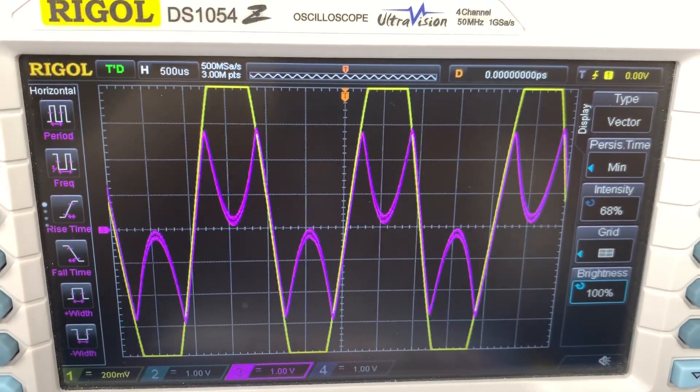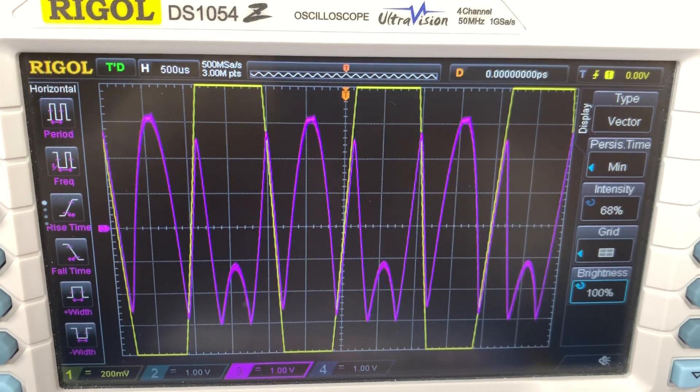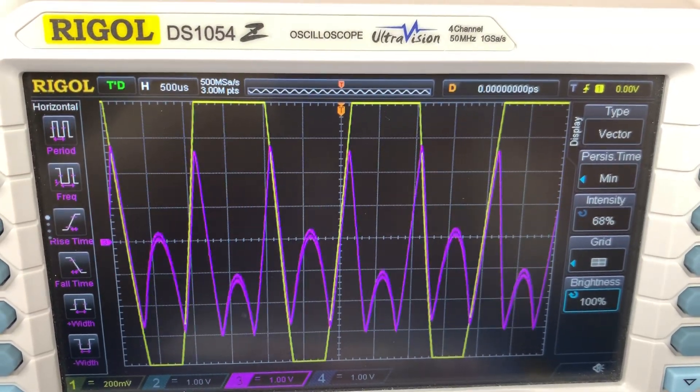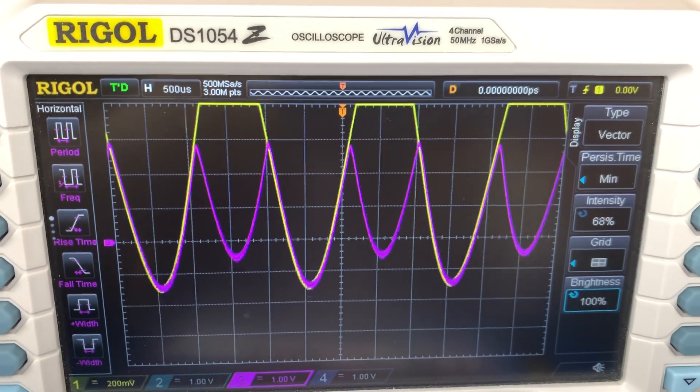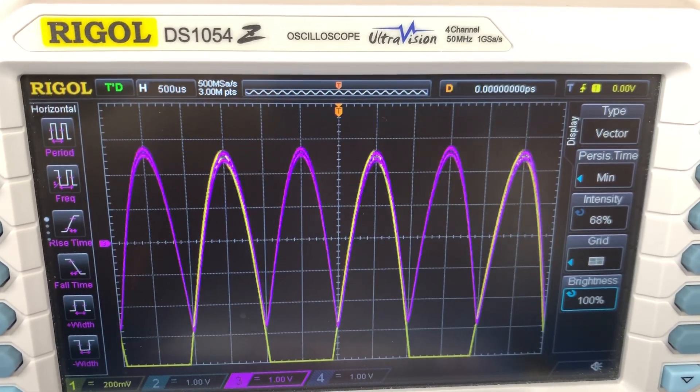I'm going to take the signal and increase the vertical offset of it, and you can see that the folding tends to occur in an asymmetric fashion now. I'm going to decrease the offset and go the other way.